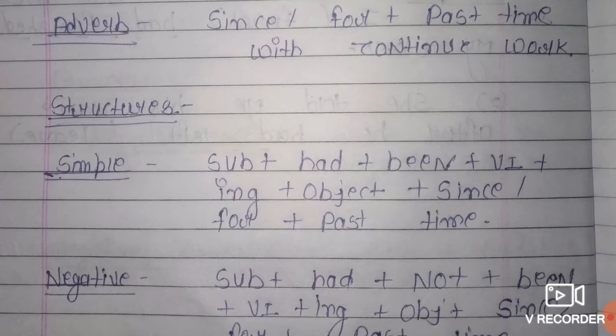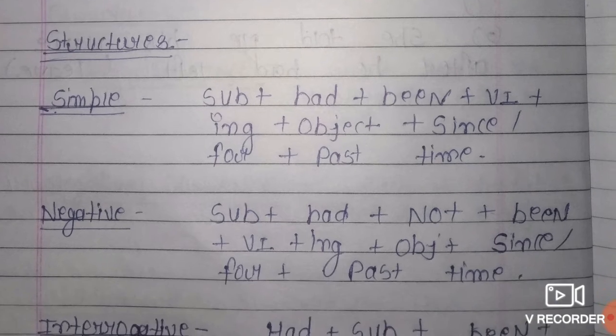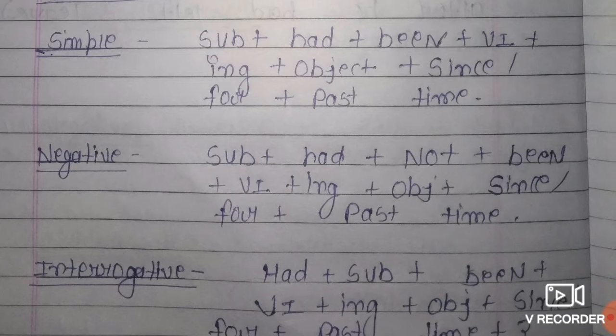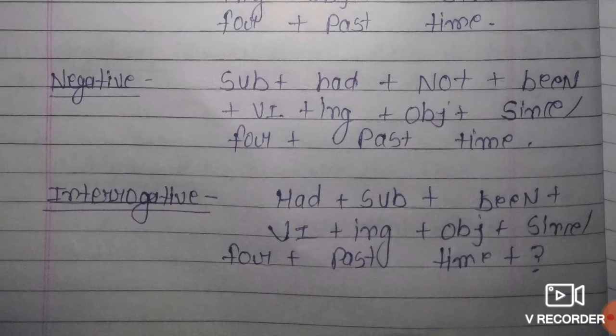Structure hai — past perfect continuous tense ko kaise frame kiya jata hai. Affirmative sentence mein: Subject + had + been + verb ki first form + ing + object + since/for + past time. Negative sentence mein: Subject + had + not + been + verb ki first form + ing + object + since/for + past time.